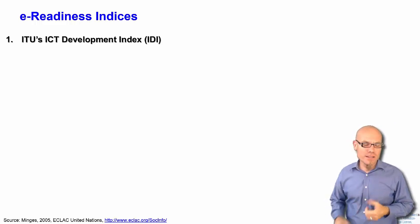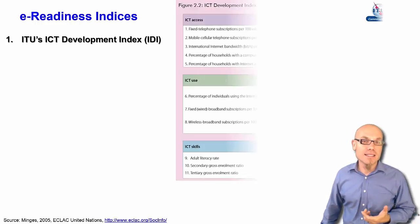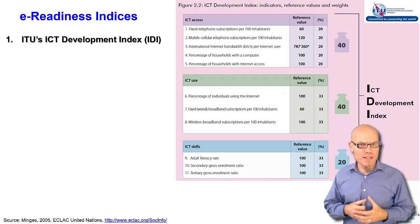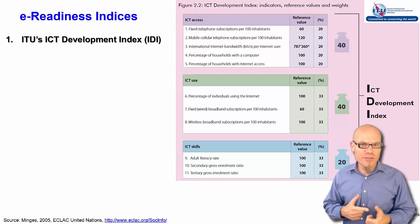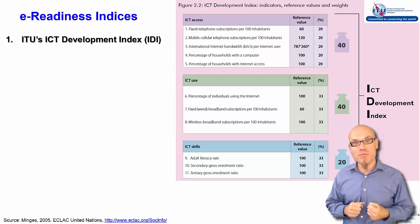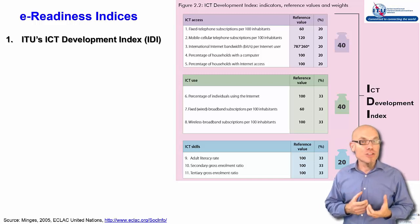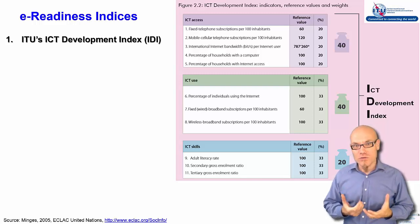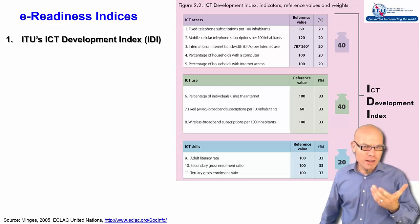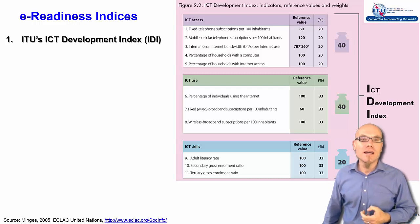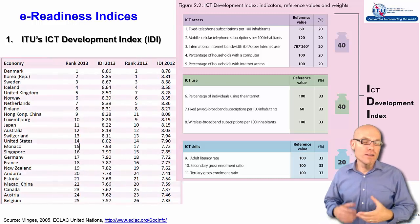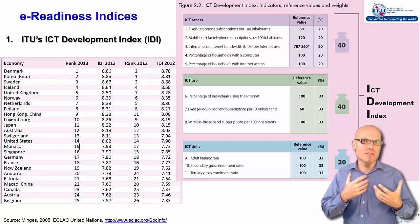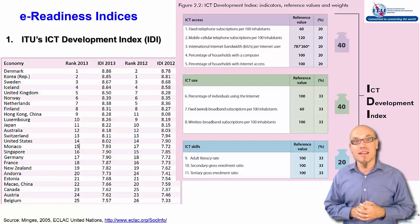The International Telecommunications Union, ITU of the United Nations, developed an ICT Development Index. They say there are three components that matter, with 11 indicators in total. First, ICT access: fixed phones, mobile phones, internet connections. Second, ICT usage: whether people use the internet and if they have broadband. Third, ICT skills: whether people in society can read and write. They measure these 11 indicators across all 200 countries worldwide and create a ranking of which countries are most advanced toward the digital age.